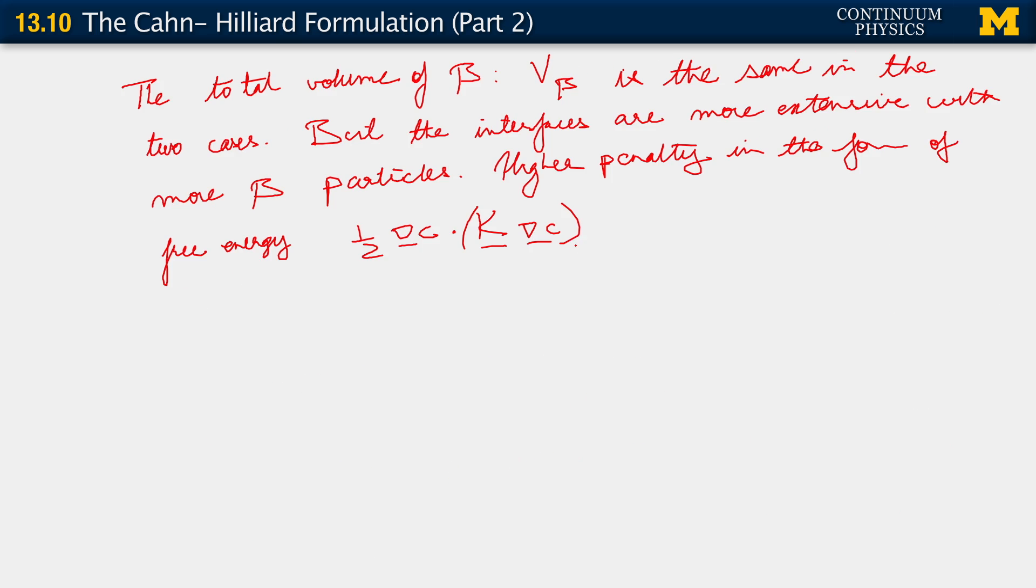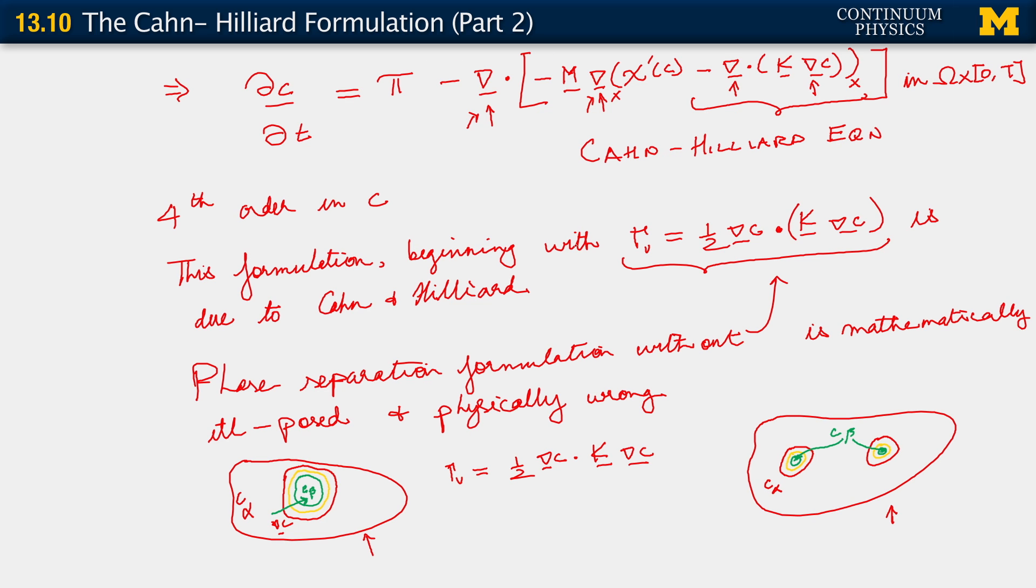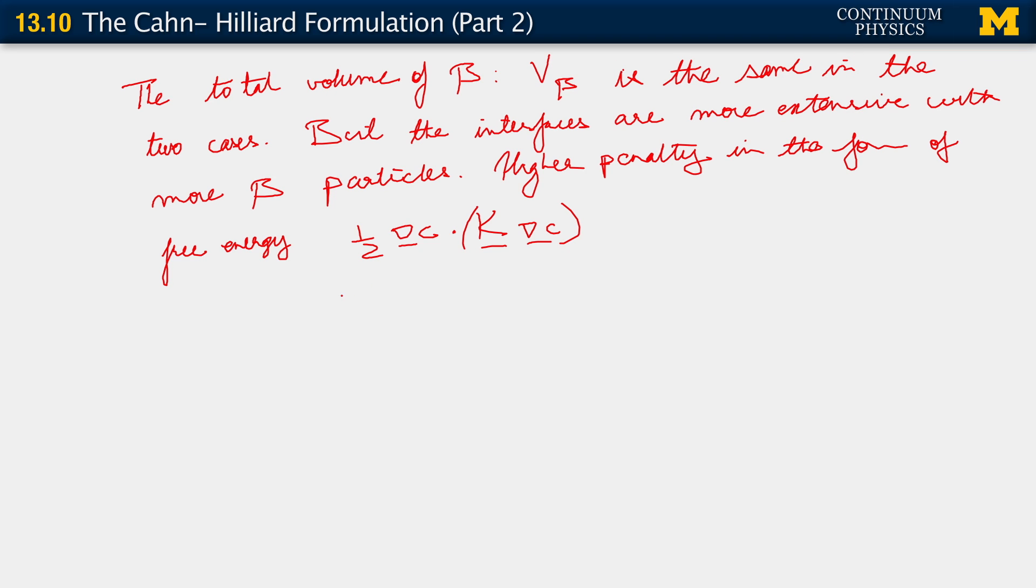In the form of the free energy, one half grad c dot k grad c. Because we have more region with interfaces. More points in the domain where the concentration is changing from alpha to beta. From c alpha to c beta. Because of the fact that there is more of that stuff in this case with more particles.